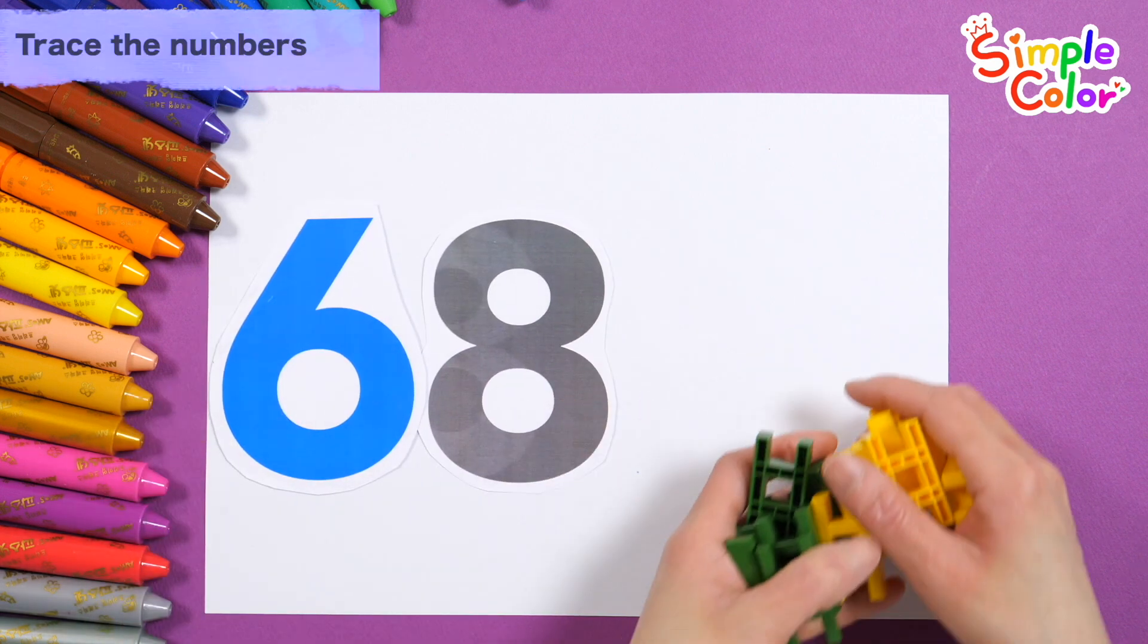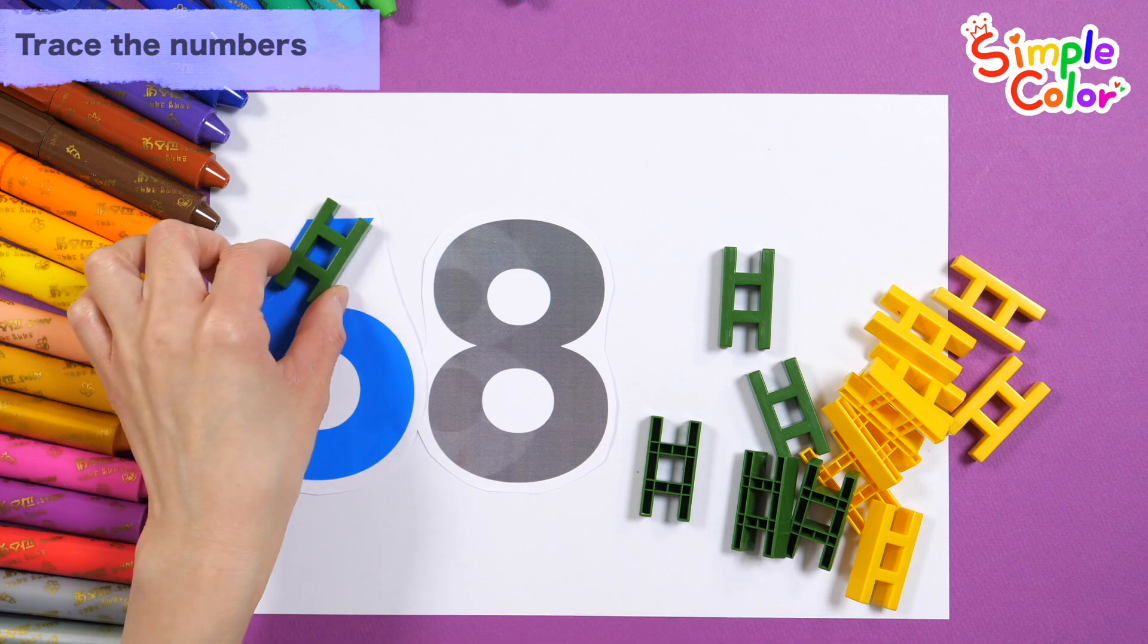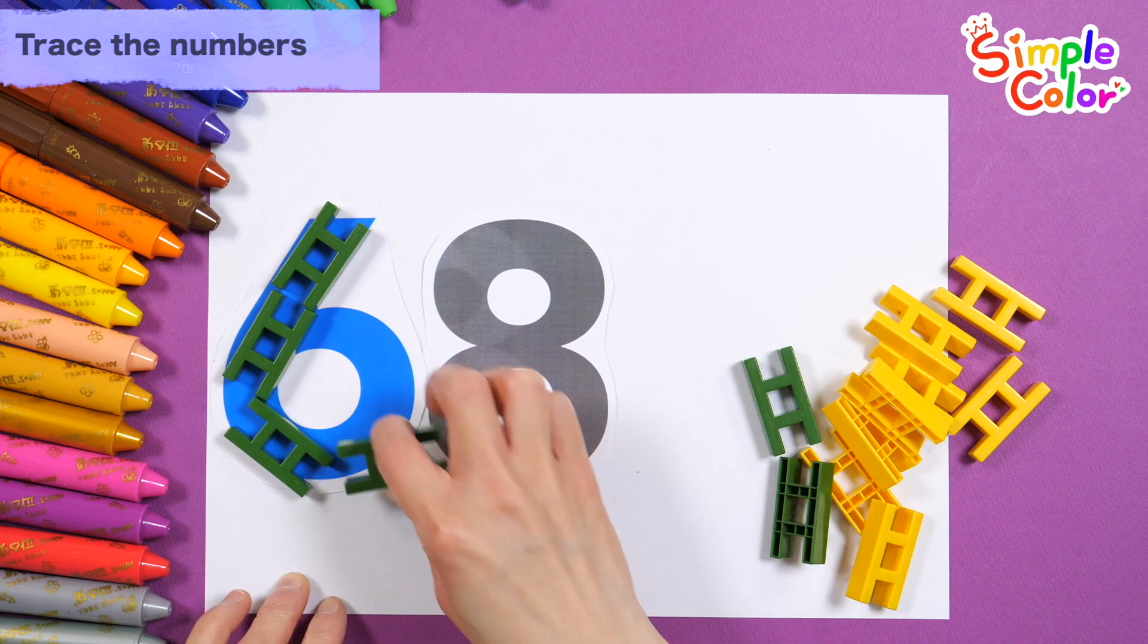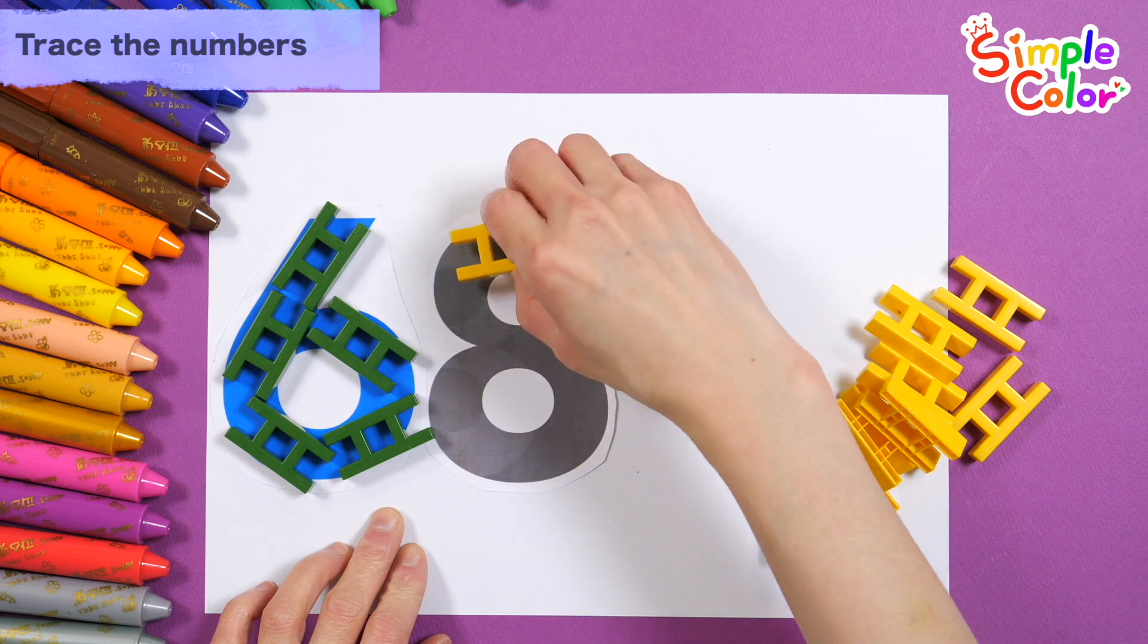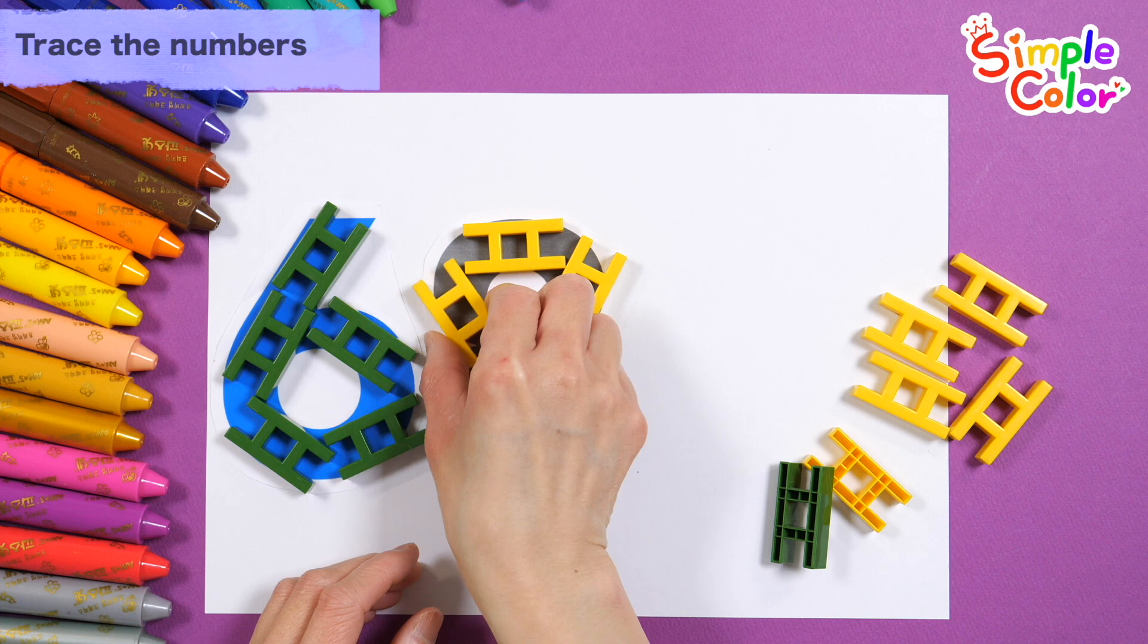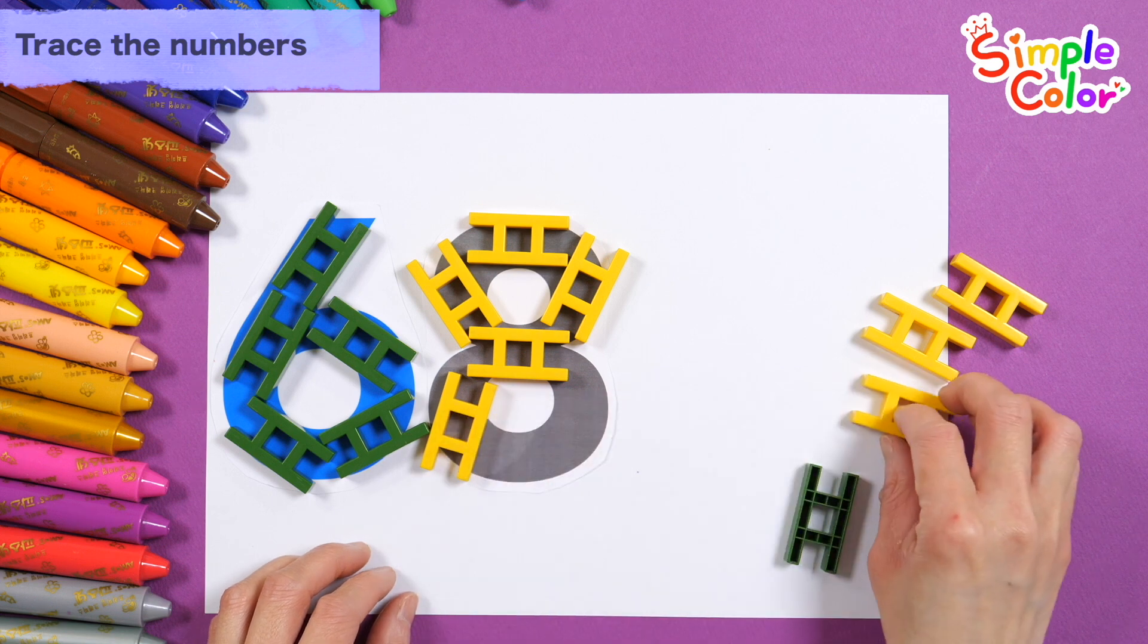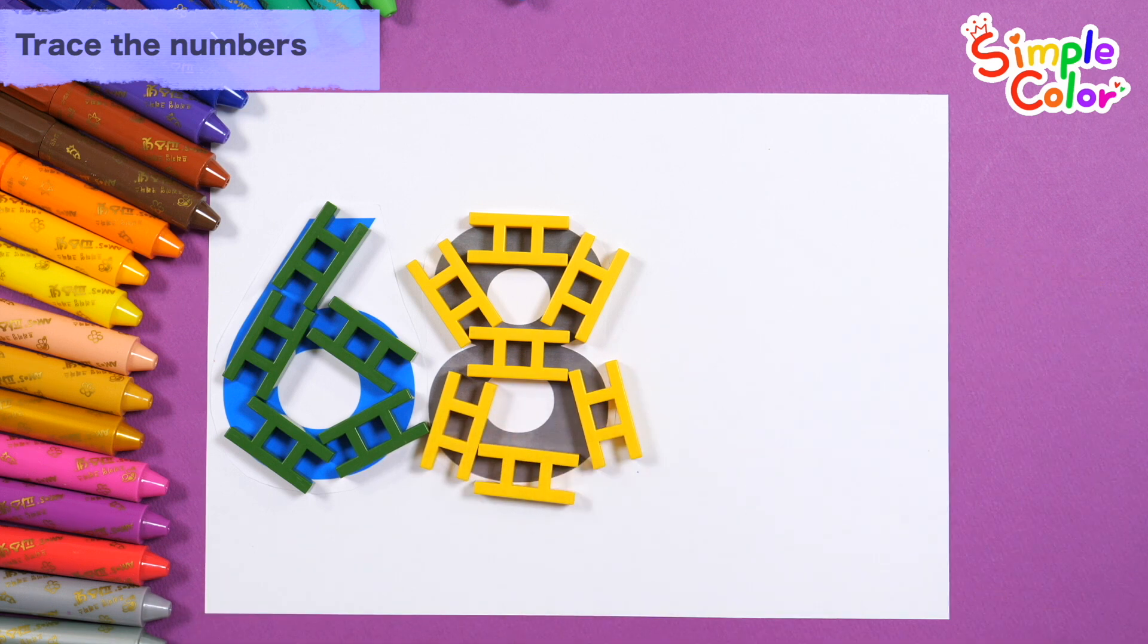68. Shall we make the number 68 with blocks? How? E-I-E-I-O. And on his farm he had some sheep, E-I-E-I-O. With a here and a there, here and a there. Everywhere, old MacDonald had a farm, E-I-E-I-O. Wow!